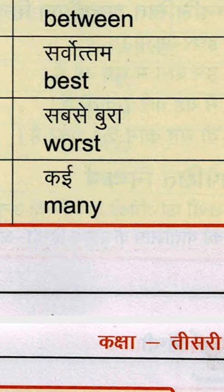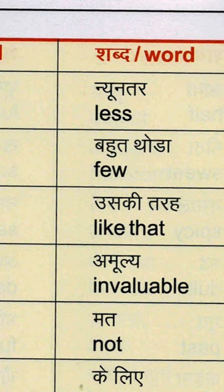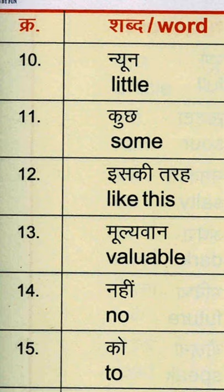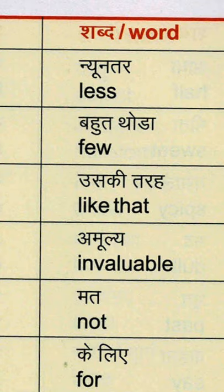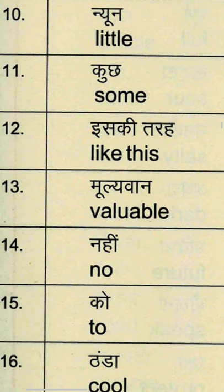फिर देखें — न्यून यानि little — L-I-T-T-L-E, little यानि थोड़ा कम। न्यूनतर यानि less — L-E-S-S. और न्यूनतम यानि सबसे कम — least — L-E-A-S-T. कुछ — some — S-O-M-E. बहुत थोड़ा — few — F-E-W. और बहुत सारे — many — M-A-N-Y.